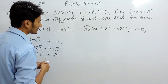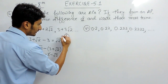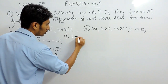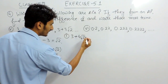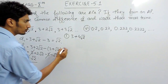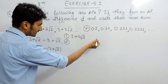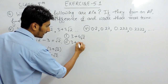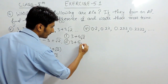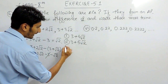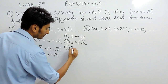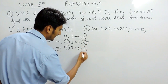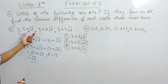If you want to write the next 3 terms: the last given term is 3√2. Adding √2 gives 4√2, then 5√2, and then 6√2. So these would be the next three terms.